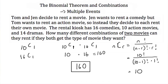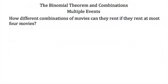Remember, whenever you have multiple events, you take the different options and multiply them together. But what if they would together rent at most four movies? There are 10 action movies, 16 comedies, and 14 dramas — a total of 40 movies. If they rent at most four movies, they may rent four, three, two, one, or possibly zero movies. So instead of multiplying, we're going to add the different combinations: 40 choose 0, plus 40 choose 1, plus 40 choose 2.